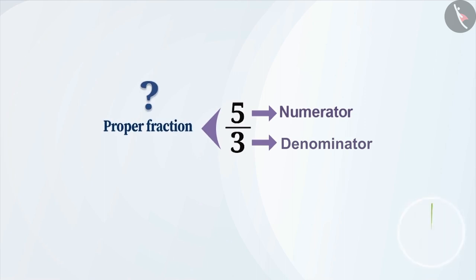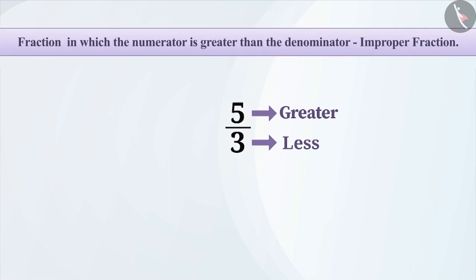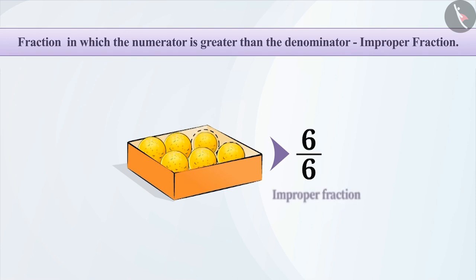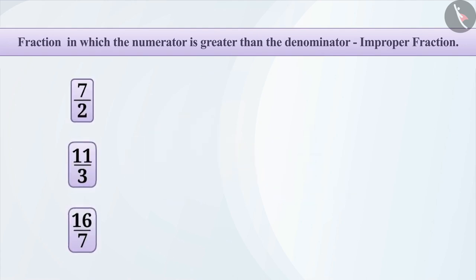Is this a proper fraction? Think about it. Here, the numerator is greater than the denominator. If you consider a box and things in it as a fraction, the denominator represents the number of things that can be placed inside the box, whereas numerator represents the actual number of things in the box. Improper fraction means that the number of things in the box are more than its capacity — that means more than one box is required. Some other improper fractions are 7 by 2, 11 by 3, and 16 by 7 etc.